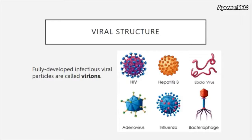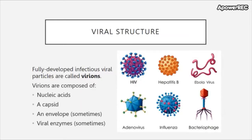Let's talk about viral structure. When a virus is fully formed — all nucleic acids bundled, packaged, and all parts assembled — they are called virions. Virions must contain their nucleic acids and a protein capsid that houses those nucleic acids. Sometimes they have an envelope that encases the capsid. And lastly, sometimes they are packaged with viral enzymes. Whatever the case, in order to be called a virion it must have all components of a full virus.